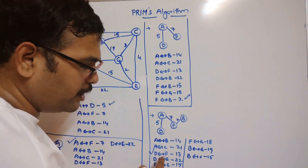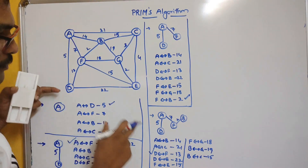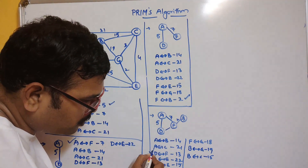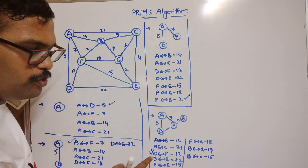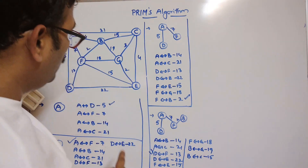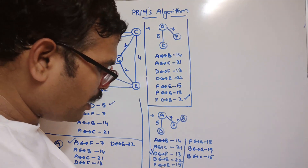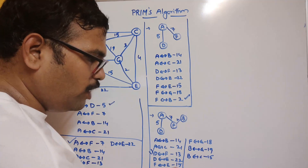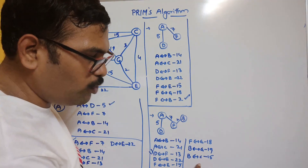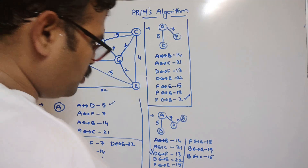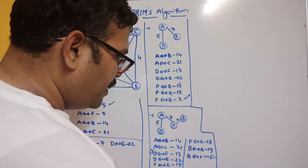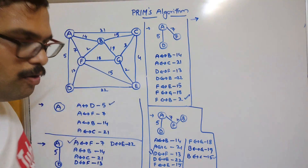Among all the remaining edges, the least is D to F with 13, but if we consider D to F it forms a cycle, so we discard it. The next least are F to E with 15 and B to C with 15 — there are two edges with equal minimum cost, so we can consider either. I will consider B to C.